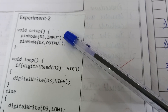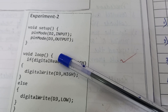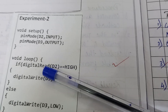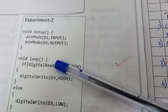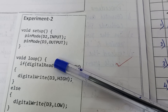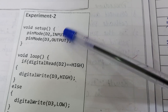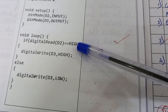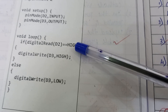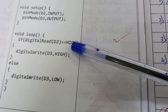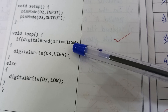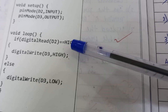Then void loop — the loop function runs continuously after the setup function has completed. Inside the loop: if digitalRead(D2) == HIGH, this line checks if the digital signal read from pin D2 is high. If it is high, it means there is a high voltage or logic one on this pin.